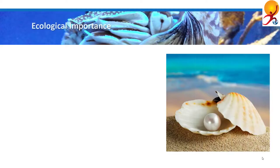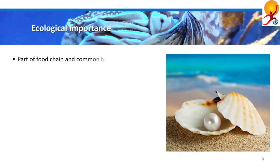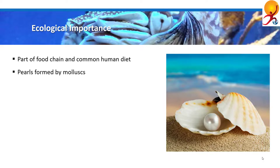Regarding the ecological and economic importance of molluscs: they play an important role in several food chains in the ecosystem. Many marine molluscs are part of the common human diet, such as octopuses and squids, which are very popular in Asia, and oysters and mussels, which are consumed all over the world.